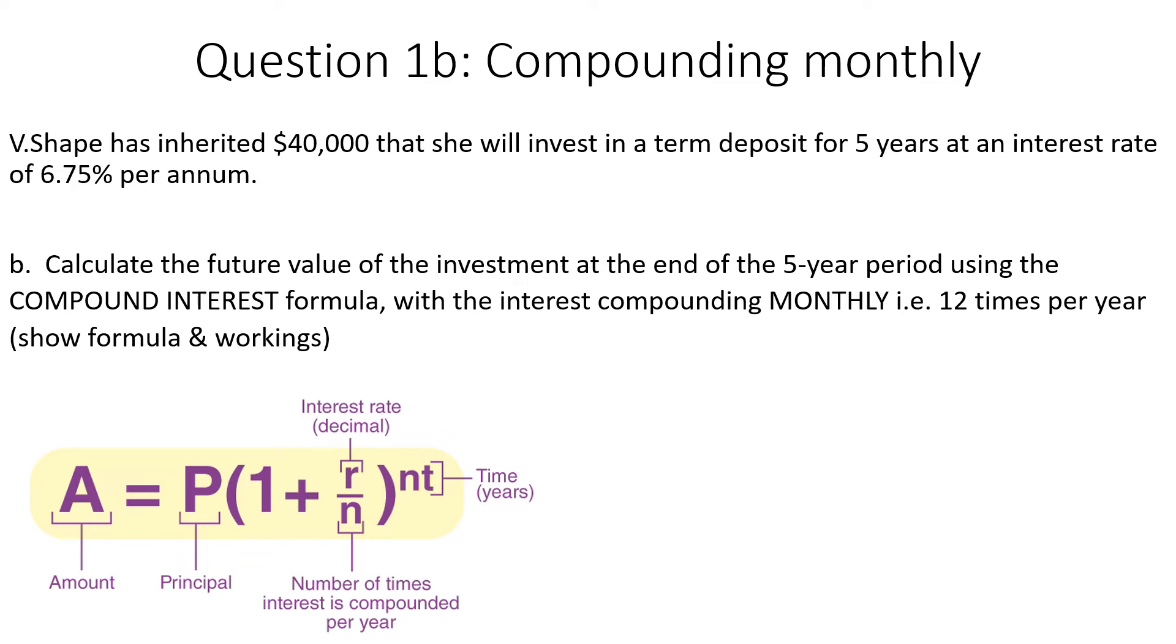What about if the investment is compounding more than once a year? So let's tackle that now. So same scenario, step one, formula. Step two, variables. Principle is still 40K. It's still five years. It's still 0.0675 but this time monthly equals 12 times. It's compounding 12 times per year.